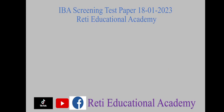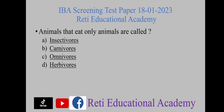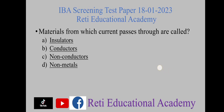Animals that eat only animals are called — A) insectivores, B) carnivores, C) omnivores, D) herbivores. The right option is B) carnivores.